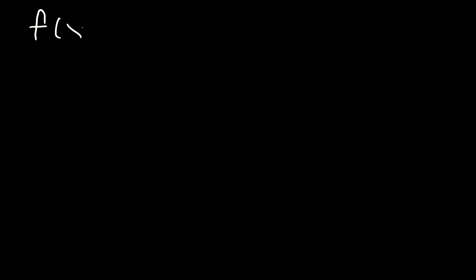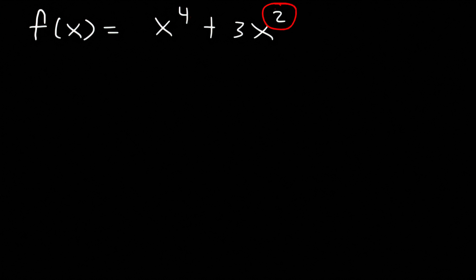So let's start with our first example. Let's say that f of x is equal to x to the fourth plus 3x squared. Is the function even, odd, or neither? Here's how you do it the easy way: look at the exponents. Is 4 even or odd? 4 is an even number. What about 2? 2 is even. So if all the exponents are even, then the function is going to be even.